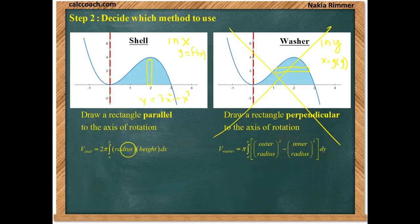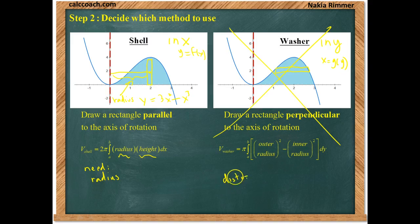For shell, what we need is the radius and the height. To get the radius, what we're going to do is attach the rectangle that you drew to the axis of rotation. That distance there is the radius. That's the distance off the y-axis, and that distance is called x. So, our radius should be x.